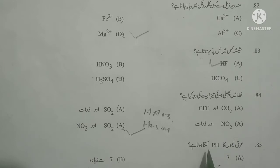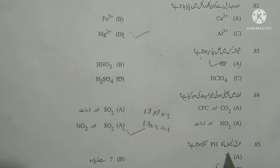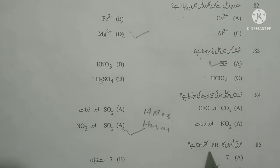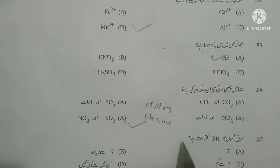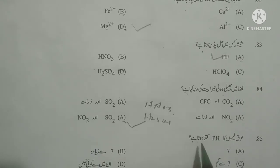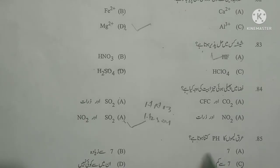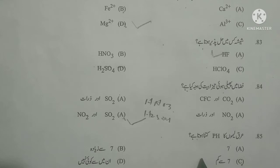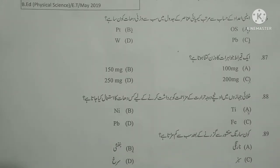Next question: Ark lemu ka pH kitna hota hai? Ark lemu means lemon juice. What is the pH of lemon juice? As you know, lemon juice is acidic, so its pH is less than 7. Option given 7 se kam (less than 7) is correct.